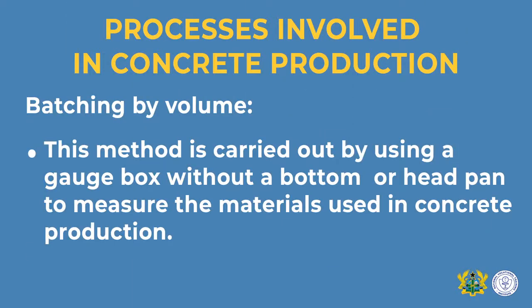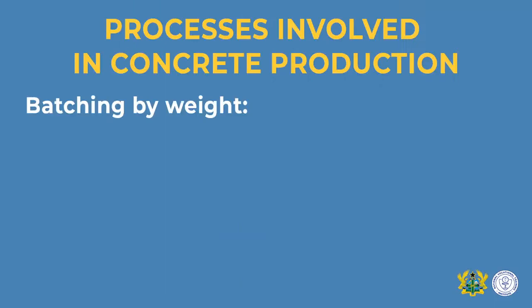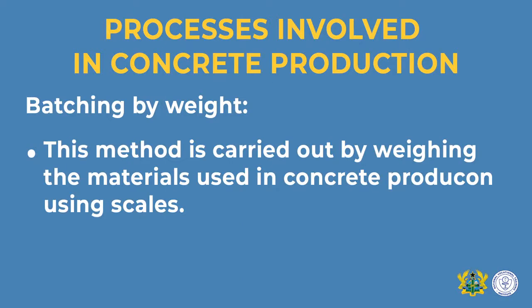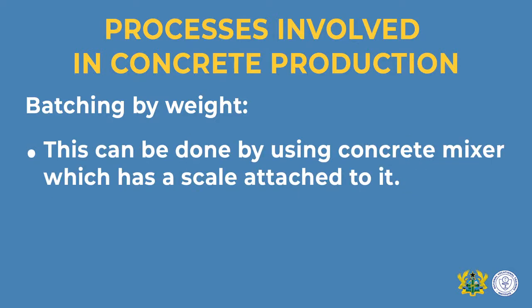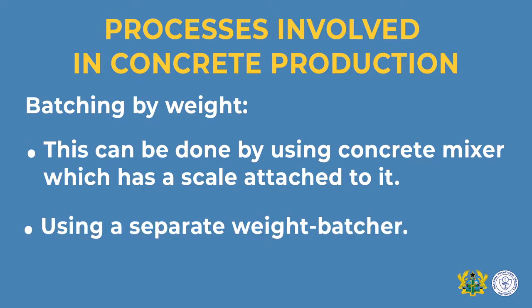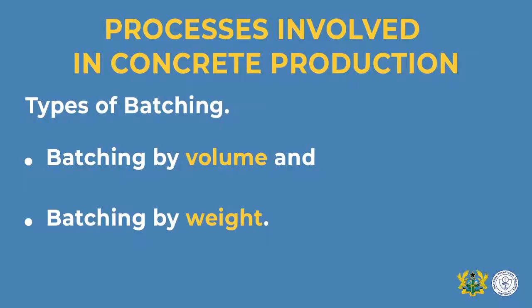Batching by volume is carried out by using a gauge box without a base or a headpan to measure the concrete materials. Batching by weight involves measuring the materials using scales, either using a concrete mixer with a scale attached to it or using a separate weight batcher.